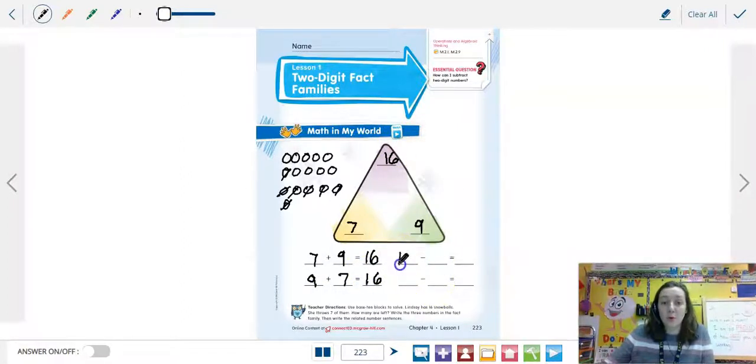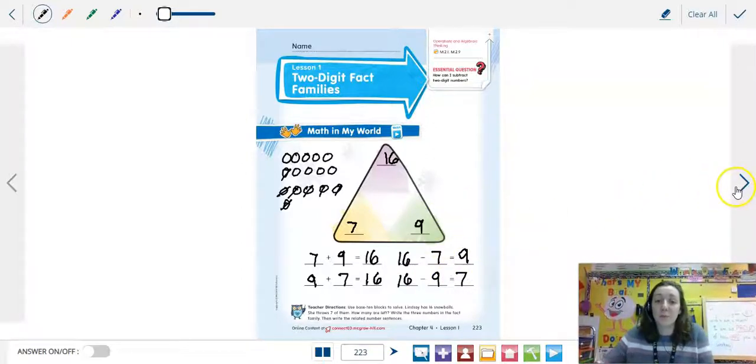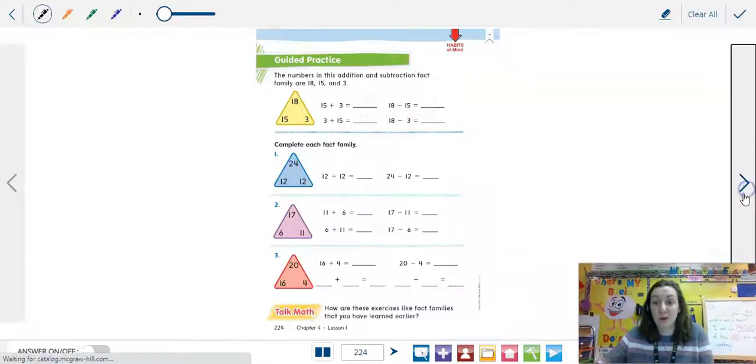With subtraction, you're going to start with the whole and take away one of the parts. So 16 minus 7 is 9. And then of course, going the other way, 16 minus 9 is 7. So exactly like we did with the other fact families, we're just going to be starting working with bigger numbers.